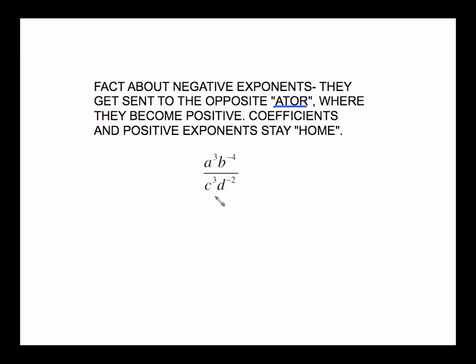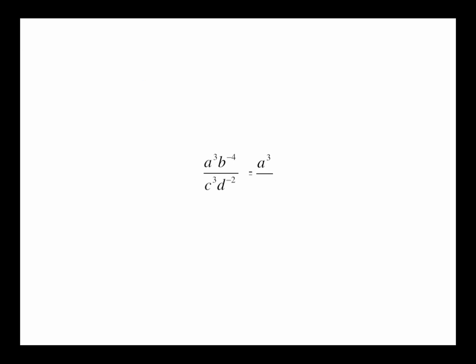When you look at an expression like this, take it bit by bit. a cubed is a positive exponent — leave it where it is. But b to the negative 4 is negative and needs to be sent to the bottom. c to the 3rd is a positive exponent in the bottom — leave it. d to the negative 2 is a negative exponent in the bottom — send it up to the top. So b to the negative 4 moved to the bottom as b to the positive 4, and d to the negative 2 moved up to the top, while a cubed and c cubed stayed exactly where they were.